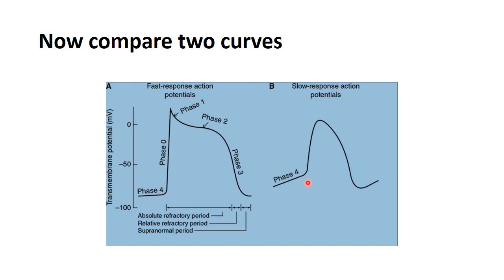Comparing the two curves: in fast response there is a clear resting membrane potential, a steep phase 0, a long plateau phase 2, and phase 3 repolarization without hyperpolarization. In slow response, phase 0 is absent or gradual, plateau is absent, phase 3 resembles a depolarization curve, and hyperpolarization is present.